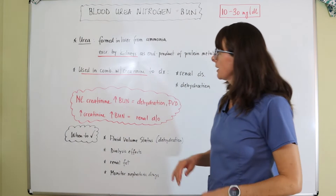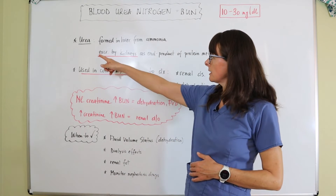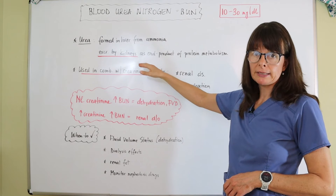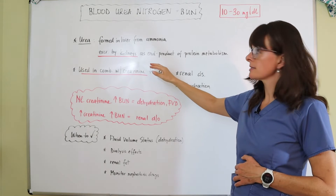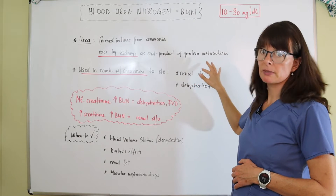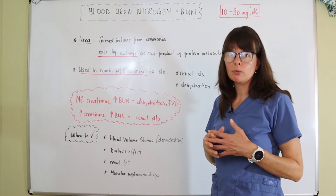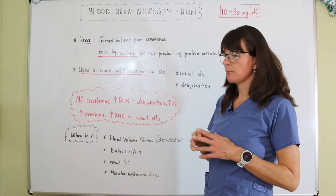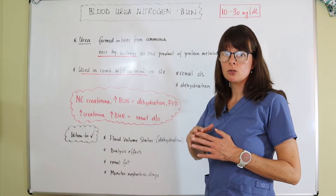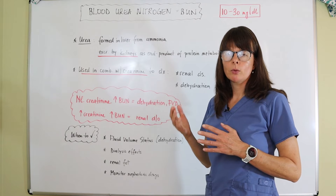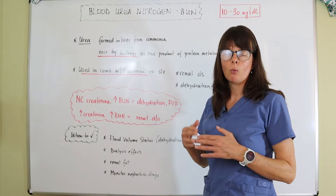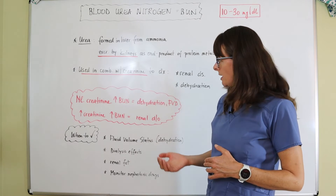Blood urea nitrogen — urea is formed in the liver from ammonia and then excreted by the kidneys, because it is a byproduct and end product of protein metabolism. As protein is being broken down, it becomes a byproduct that the kidneys remove from our system. Therefore, when we measure BUN, we can measure how well the kidneys are functioning by seeing how well they're excreting the urea.